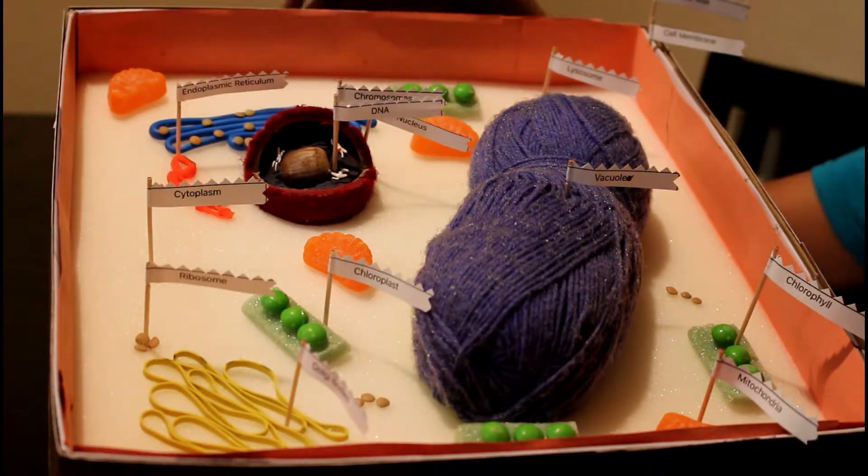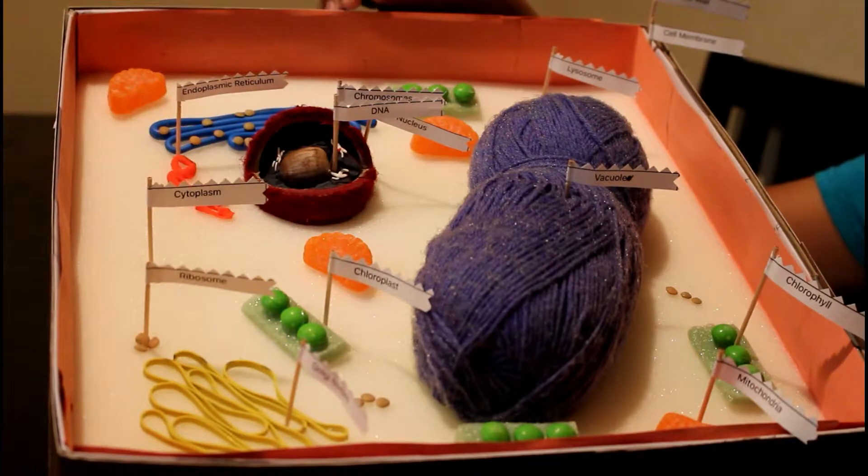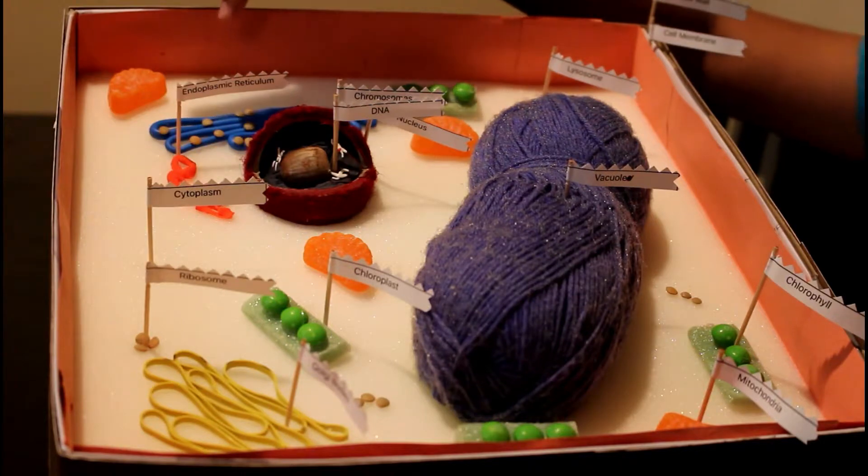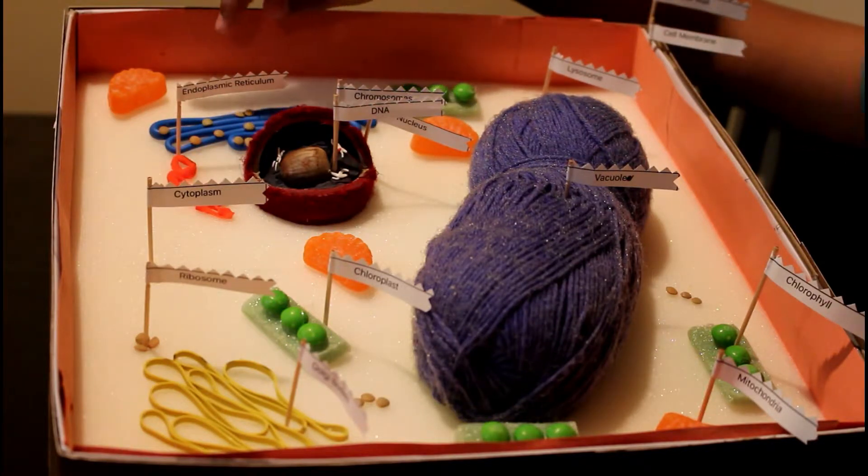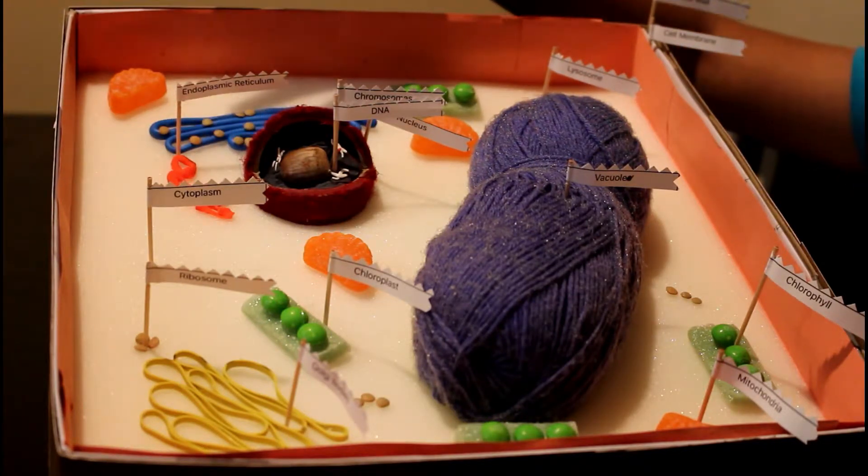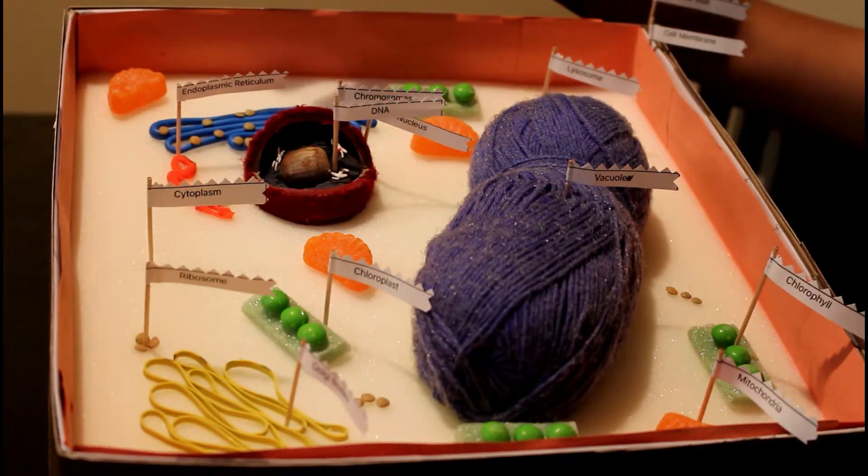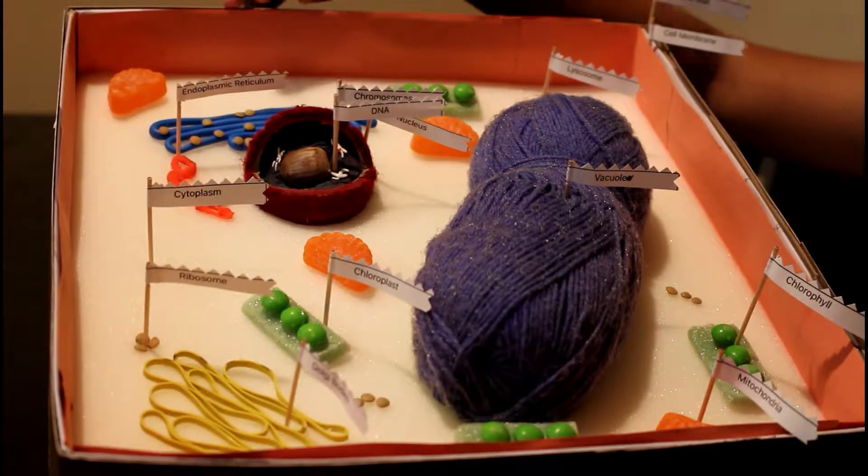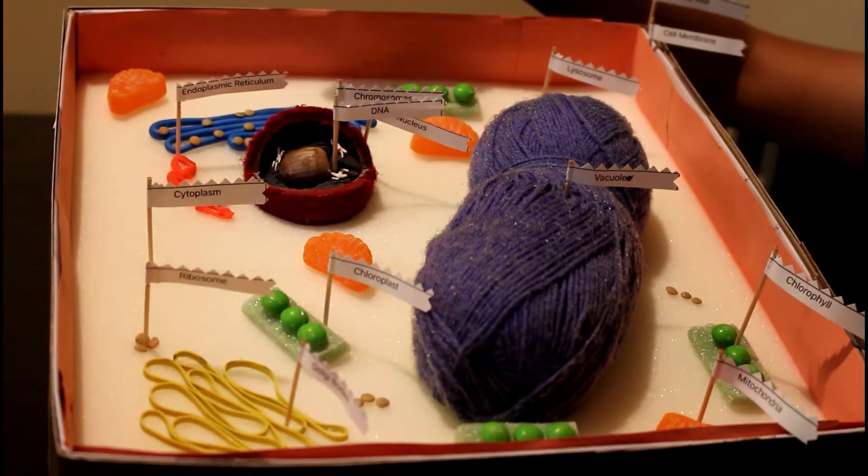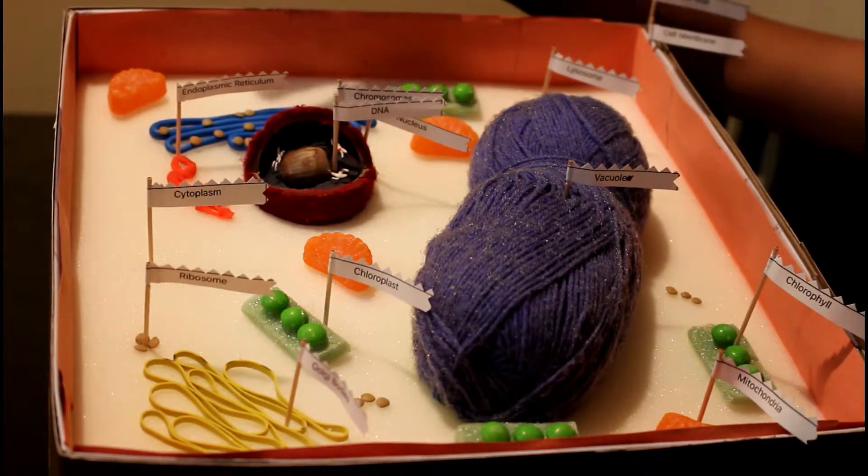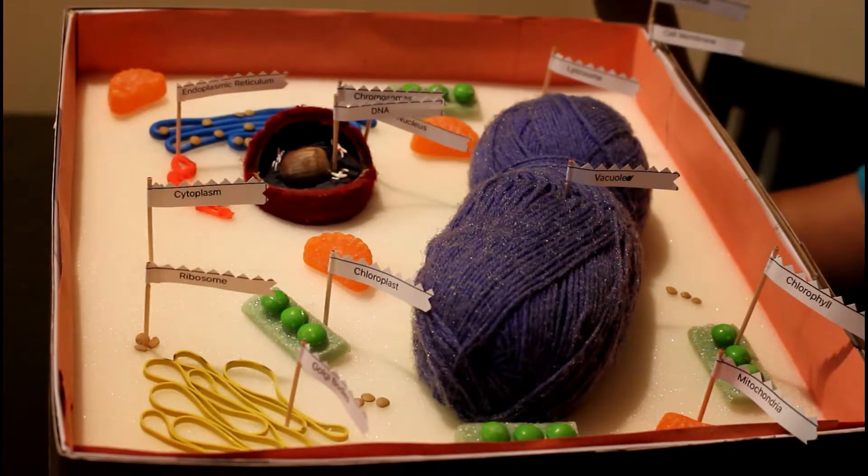This is an endoplasmic reticulum, and there are two types: there's a rough one and a smooth one. It's inside the cell and it's a network of folded tubes and membranes. It carries proteins and materials from one part of the cell to another.